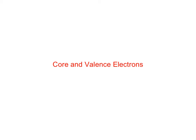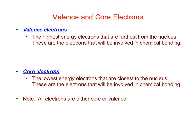In this video we're going to talk about core and valence electrons, a topic very closely related to electron configurations. Valence electrons are the ones with the highest energy that are furthest from the nucleus. The reason we're interested in core and valence electrons is because it's the valence electrons that are going to be involved in chemical bonding. The core electrons are the lowest energy electrons, and these are the ones that are closer to the nucleus. Generally core electrons are not involved in chemical bonding.